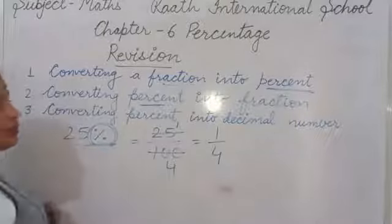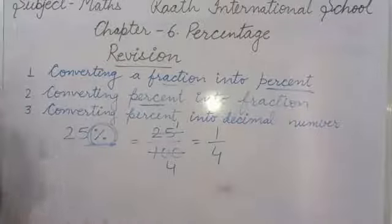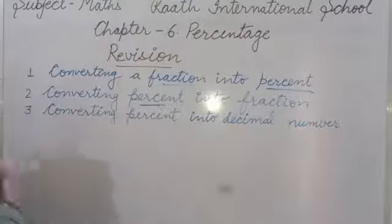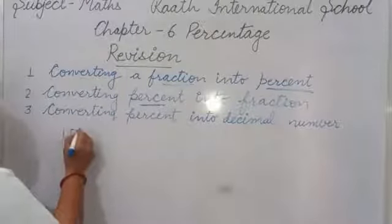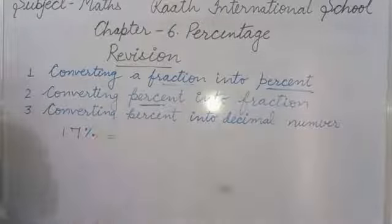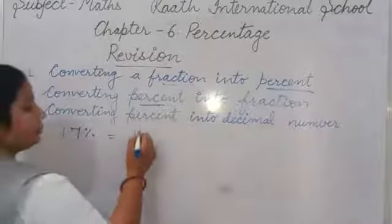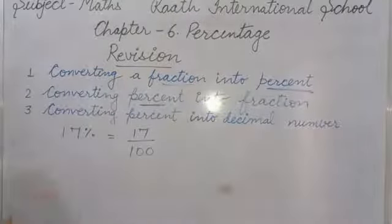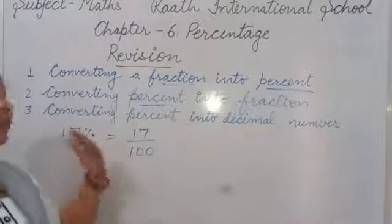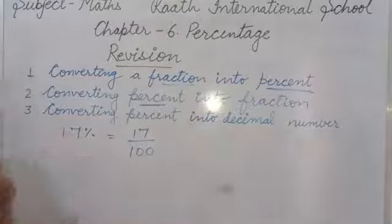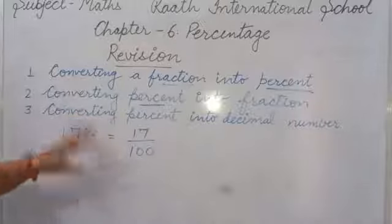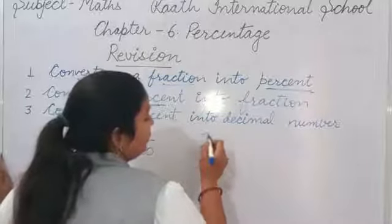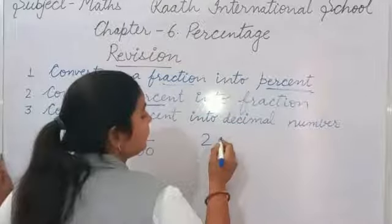So like this we have to solve. Suppose another example: 17 percent. How will you do it? 17 upon 100. They are not coming in the same table because 17 is a prime number — it will come only in the 17 times table and 100 does not appear in the 17 table. So the answer is 17 upon 100.